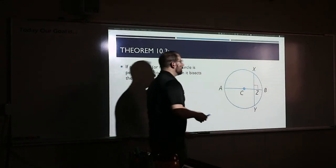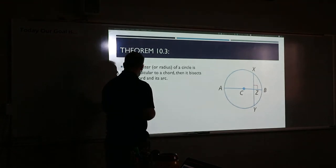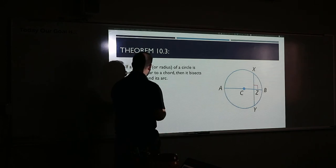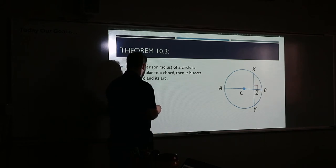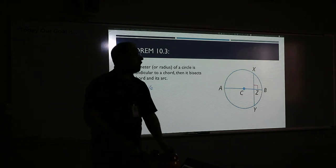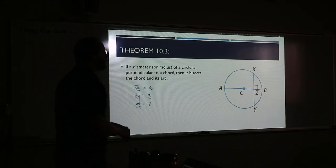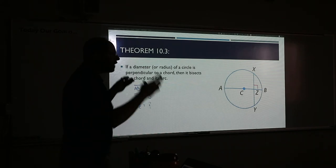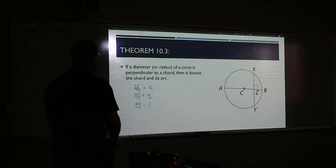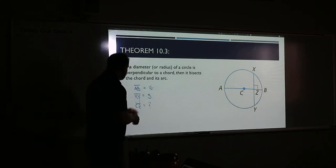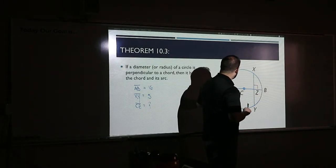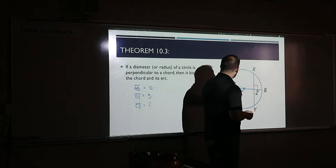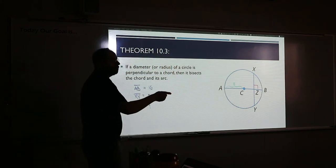Now the type of problem they could do: they tell me AB — the whole stick — is 16, XY is 5, and they want to know the length of CZ. This problem is significantly more challenging than the last ones, because now it's very open-ended. You have to put a lot of things together. They're giving you AB — that's the whole diameter going all the way across. So what does that make this piece? 8. The radius is 8, because you take the whole diameter and split it in half.